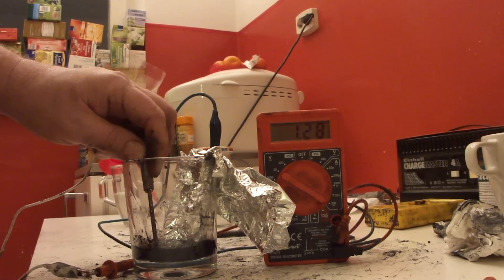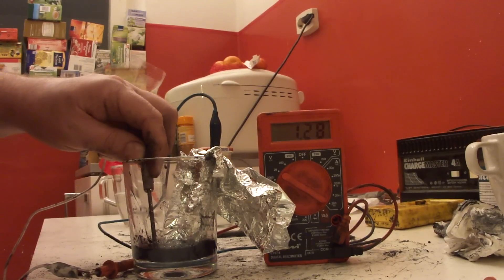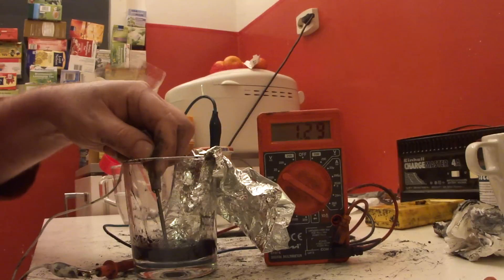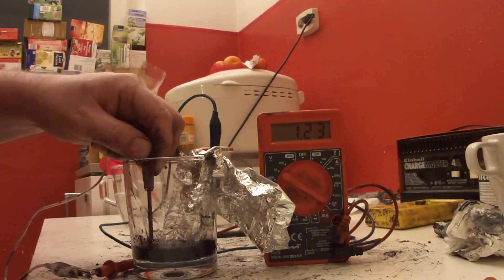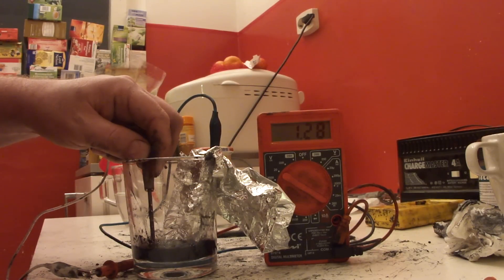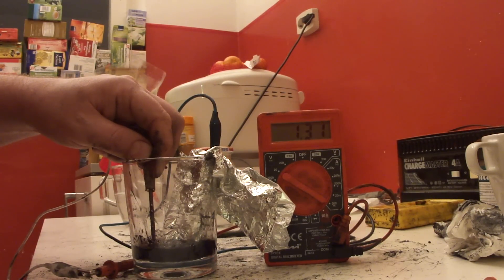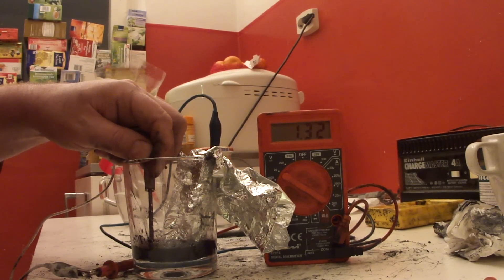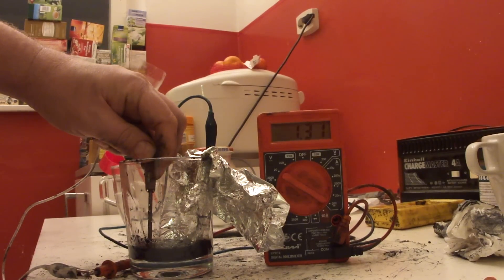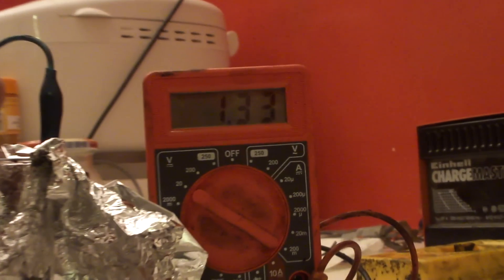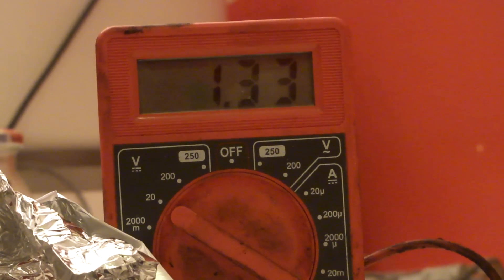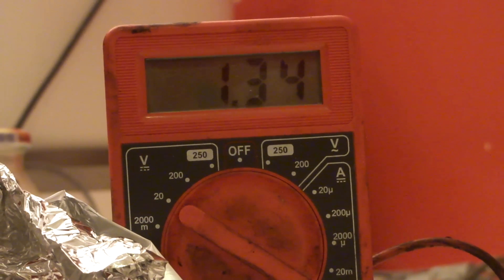OK, I'm back and you see here I have now aluminum foil and here's a graphite electrode. I'm already getting 1.3 volts rising. It's now a little bit lower, normally you get about... OK, still rising a bit, 1.34.